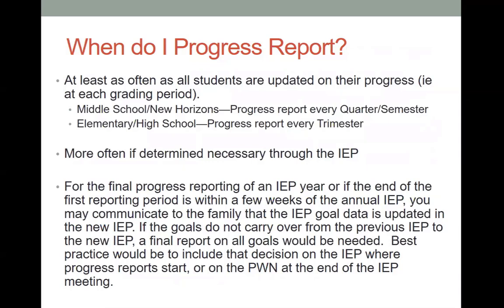For the final progress reporting of an IEP year, or if it's at the end of the first reporting period which is within a few weeks of the annual IEP, you may communicate to the family that the IEP goal is updated in the new IEP. Understanding that you're bringing in the old goal information and talking about how they progressed, a final report on those goals would be needed. Best practice would be to include that decision on the IEP or on the prior written notice at the end of the meeting.